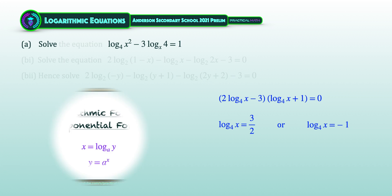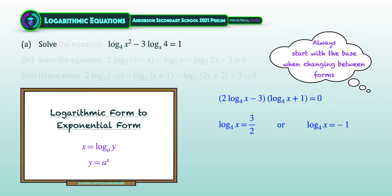To solve for unknown x, we will have to change the logarithmic form to exponential form, where we change x equal to log y to the base of a into y equal to a to the power of x. We should always begin the conversion with the base, as both the logarithmic form and exponential form have the same base.